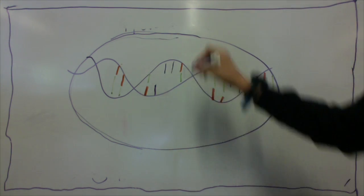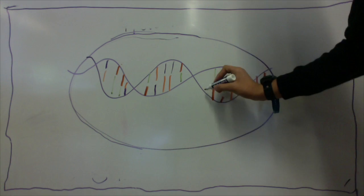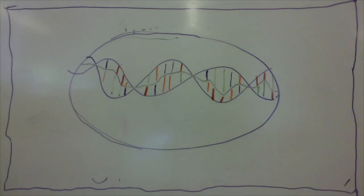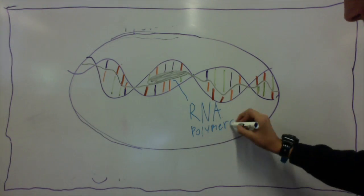First, we see the DNA, which encodes all the information for the TYR gene, or tyrosine gene, which is the one that we are looking at today.